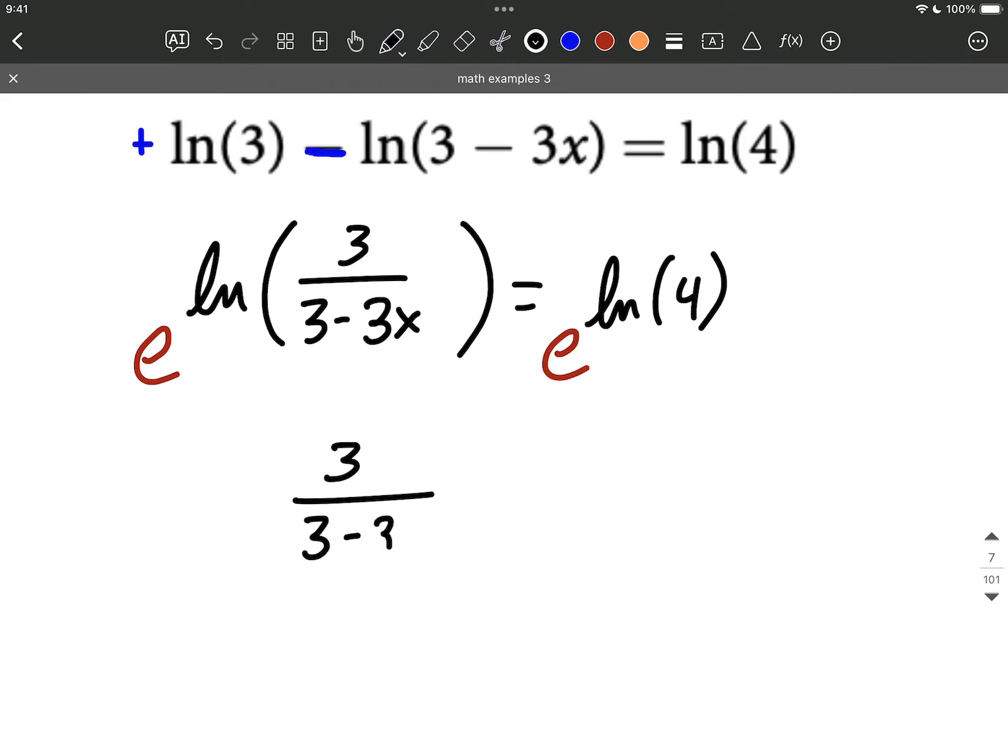We get 3 over 3 minus 3x in this case equals 4. And we just need to solve this equation that no longer involves logarithms.